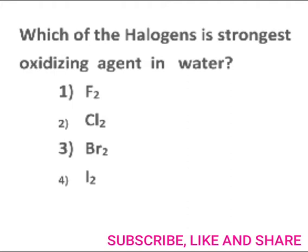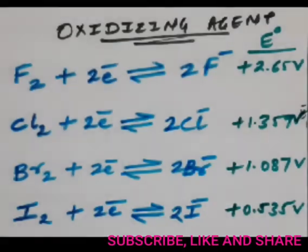To find the correct option, let us move ahead. There are two ways to get the solution for this particular question. The first way is by knowing the reduction potential values, which you can easily get with the help of the electrochemical series.